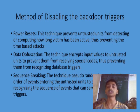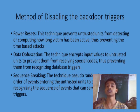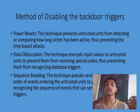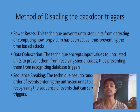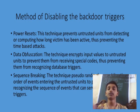Method of disabling backdoor triggers: backdoor triggers are the keys used by the backdoor user — the person who tries to enter from the backdoor uses these triggers. If we disable the backdoor triggers, the use of backdoors can be minimized. The first method is power reset — the power reset technique prevents untrusted units from detecting the time a system administrator is active.